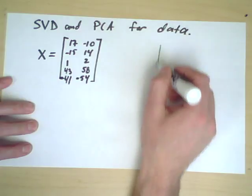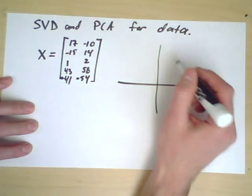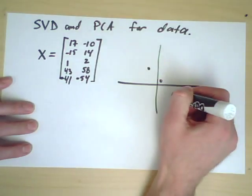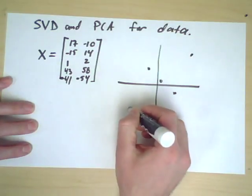If I were to sketch these it would look something like this. There's a point here, a point here, a point here, a point here, and a point here.